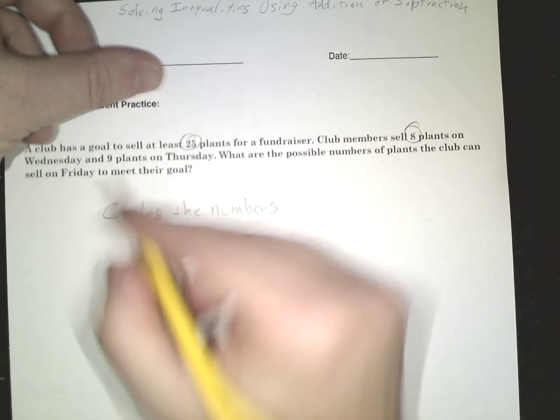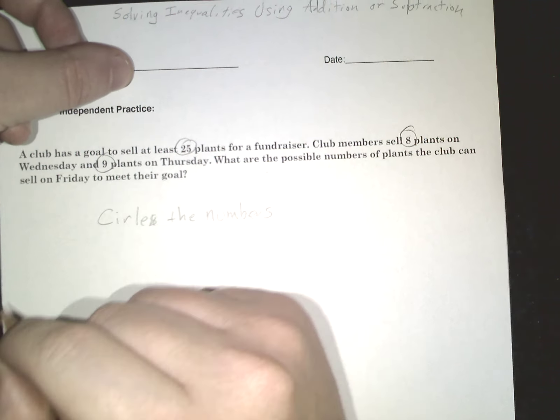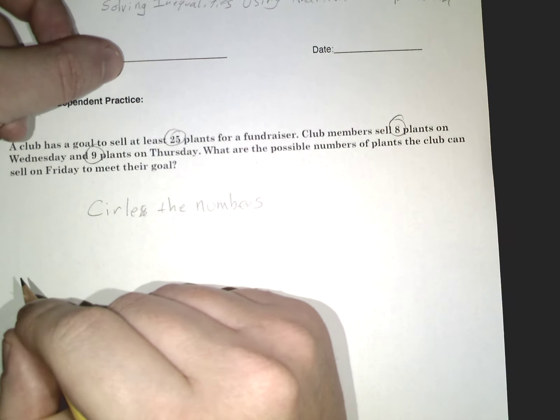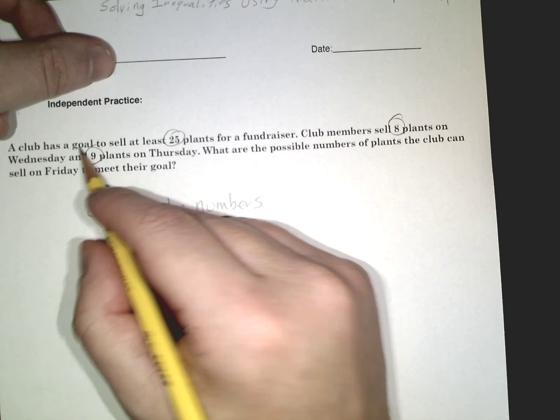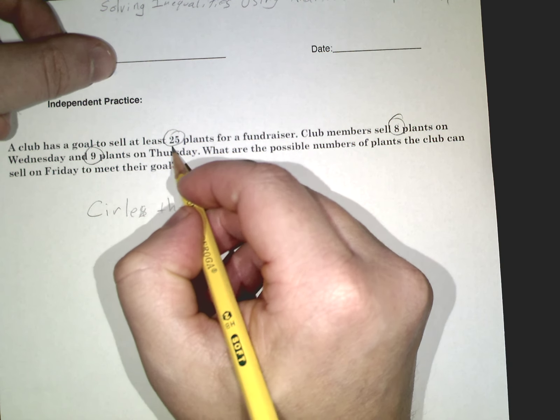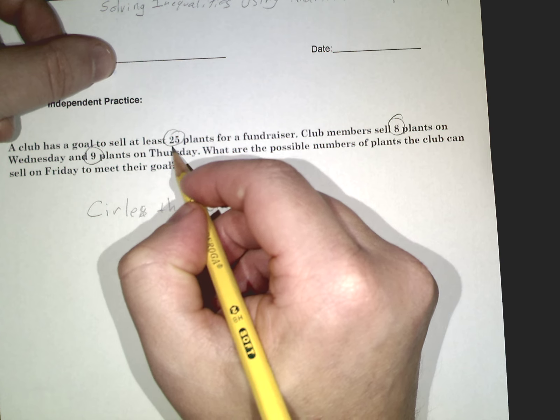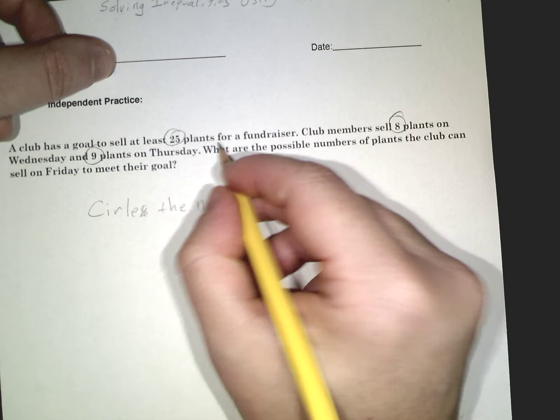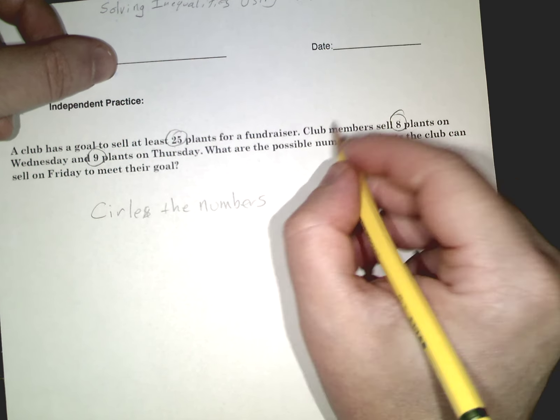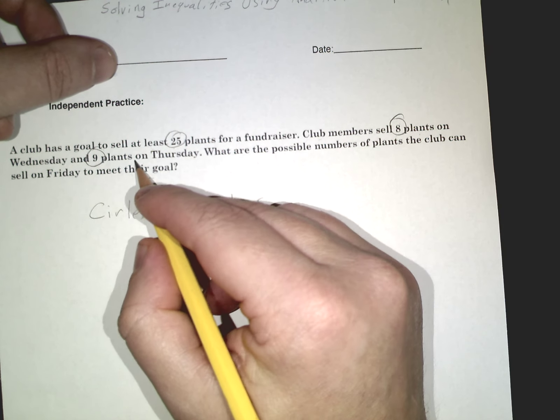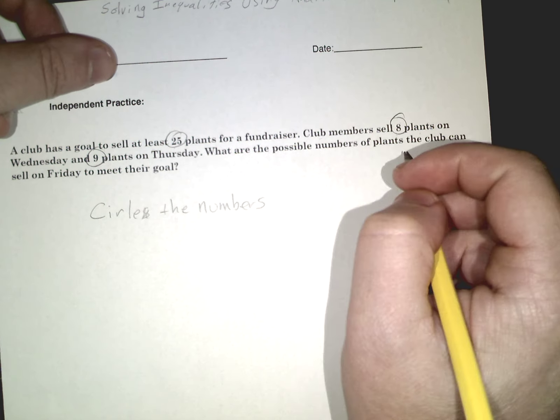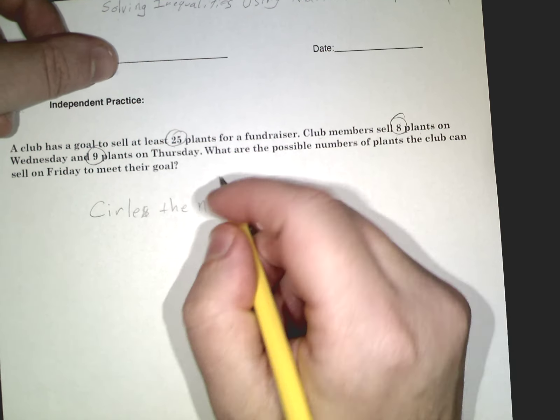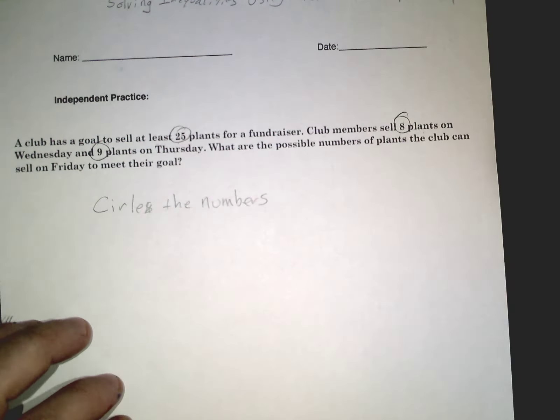So a club has a goal to sell at least 25 plants for a fundraiser. Club members sell 8 plants on Wednesday and 9 plants on Thursday. What are the possible number of plants the club can sell on Friday to meet their goal? Let's imagine this - we want to sell 25 plants, at least 25.